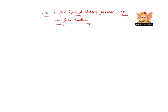Let us now learn how to find rational numbers between any two given numbers. This is a very easy method. So before we take an example to solve, let us consider x and y as two numbers.